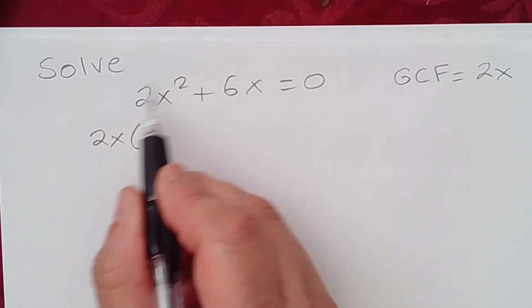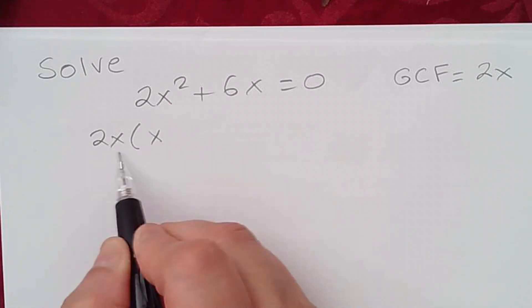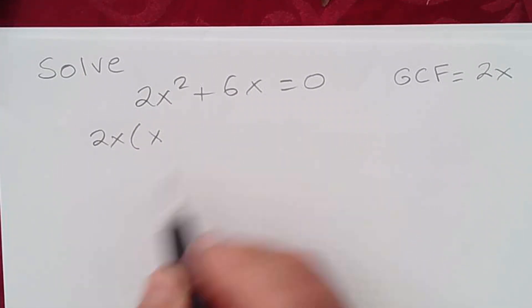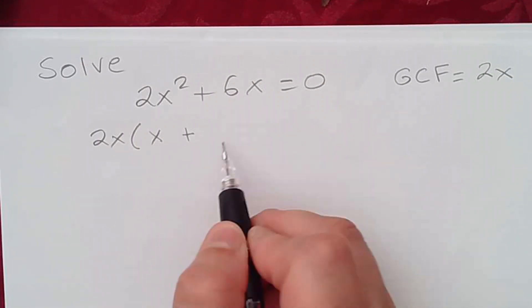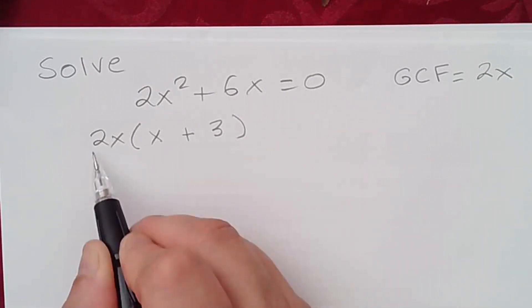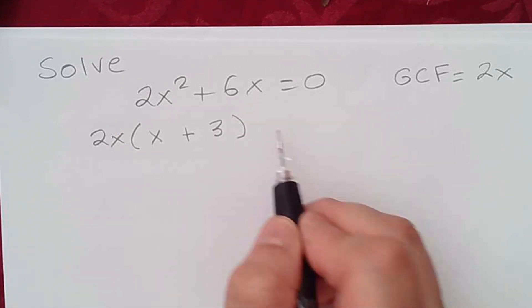You can also divide the first term by the greatest common factor. 2x² divided by 2x would give me x plus. Now, if we factor 2x from 6x, we'd be left with 3. So 2x times 3 gives me 6x, and that's equal to 0.